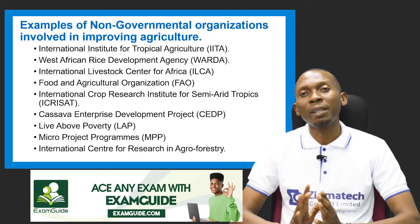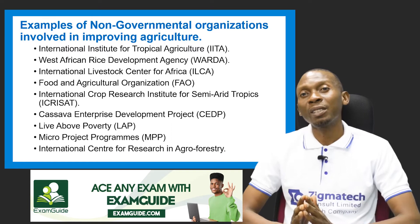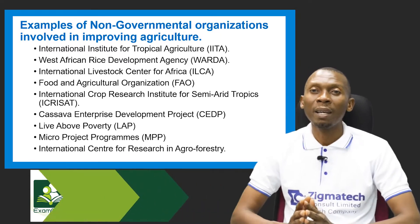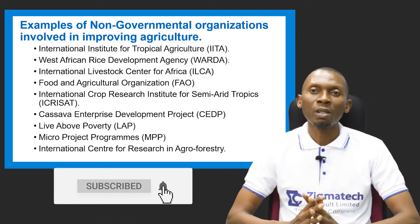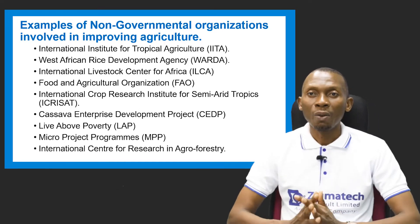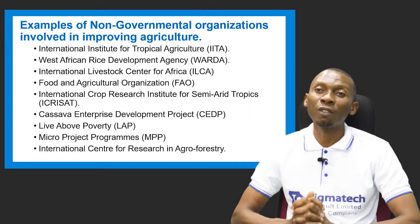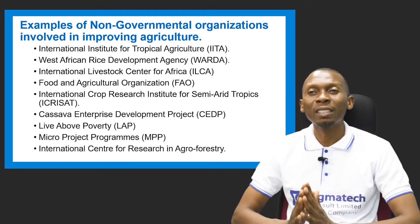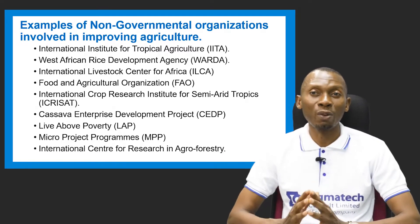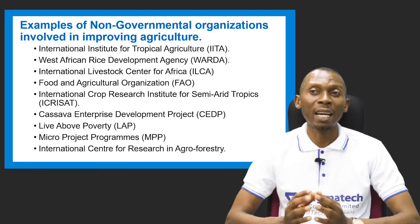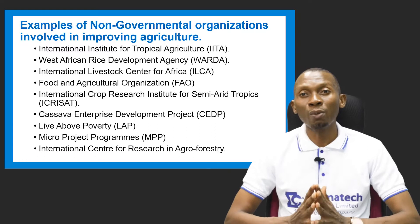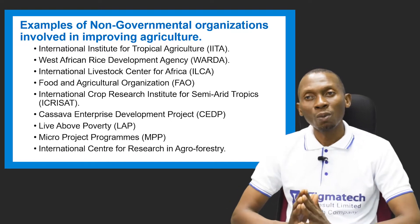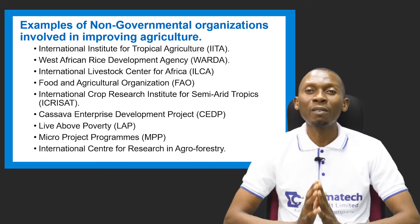Let's take a look at the non-governmental organizations that are involved in improving agriculture. We have the International Institute for Tropical Agriculture, IITA, and West African Rice Development Agency, WARDA. Now we know the meaning of IITA, which is International Institute for Tropical Agriculture, and WARDA, which is West African Rice Development Agency.